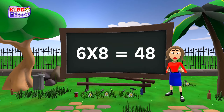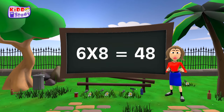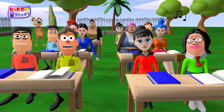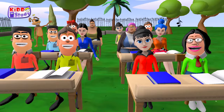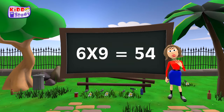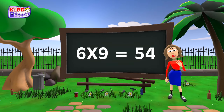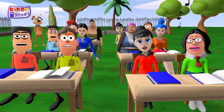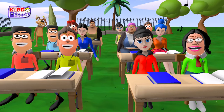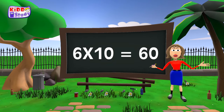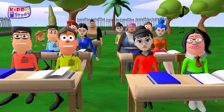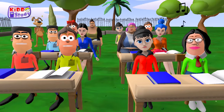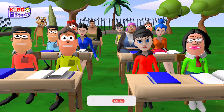Six eights are forty eight. Six eights are forty eight. Six nines are fifty four. Six nines are fifty four. Six tens are sixty.